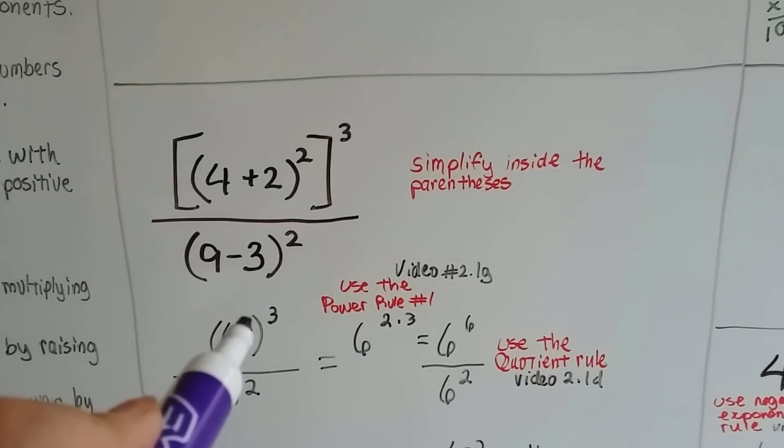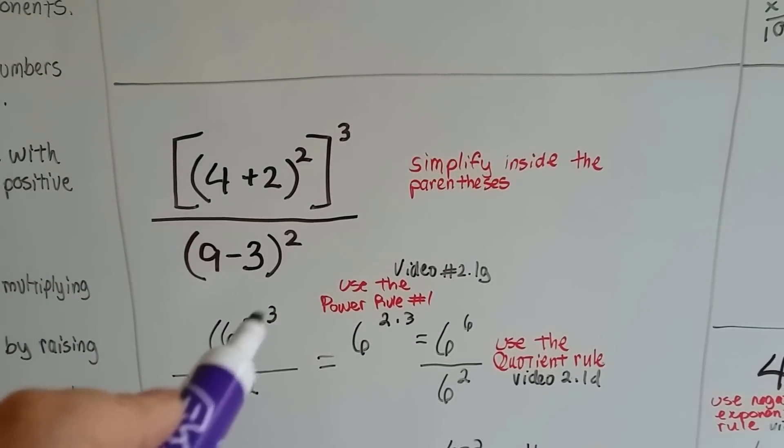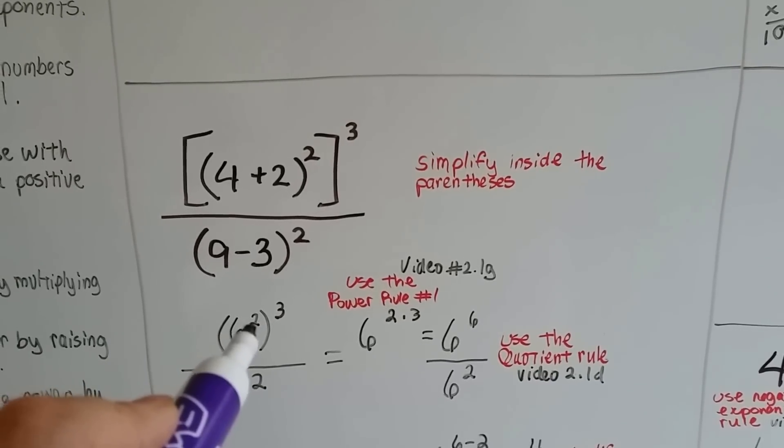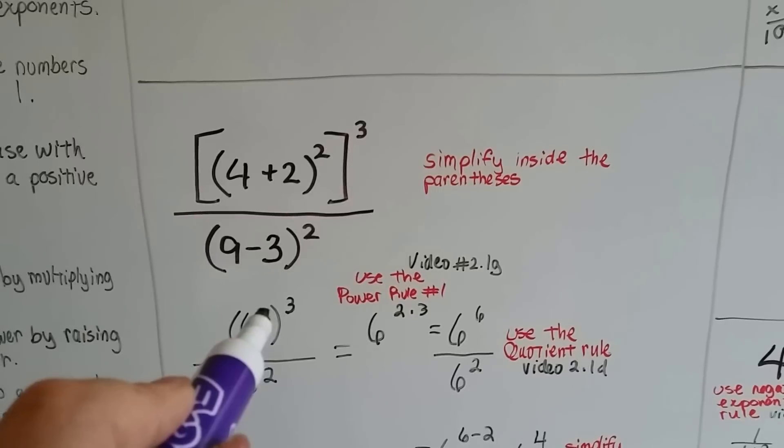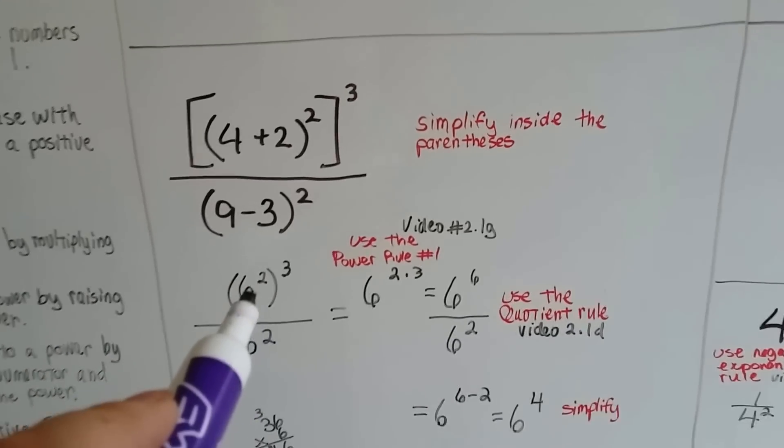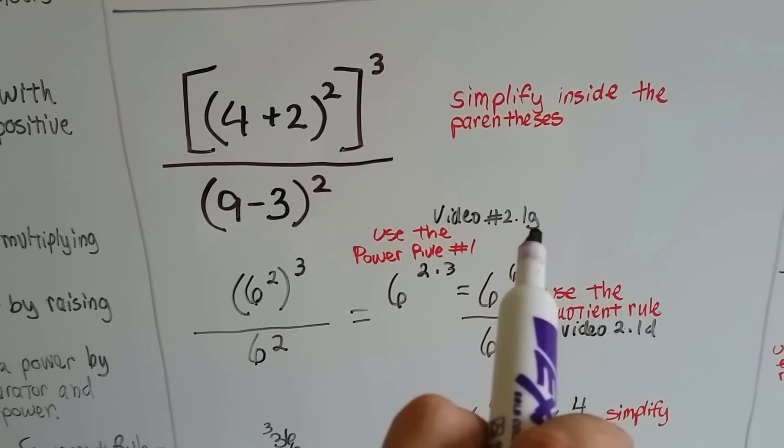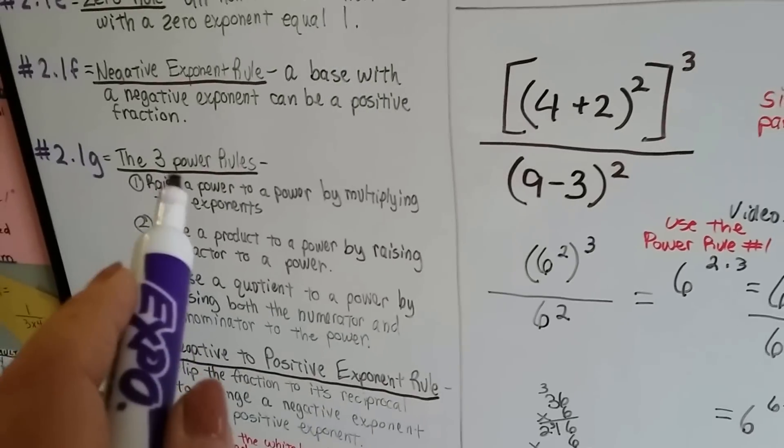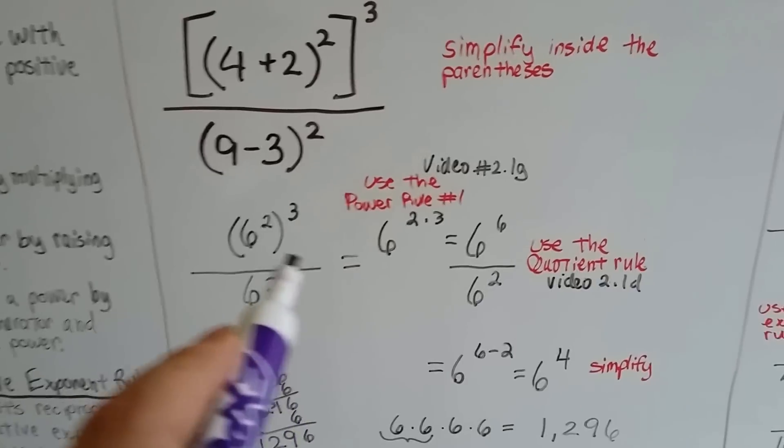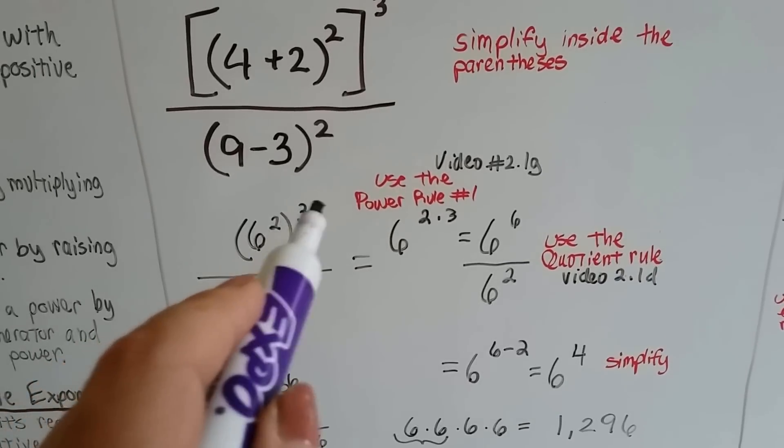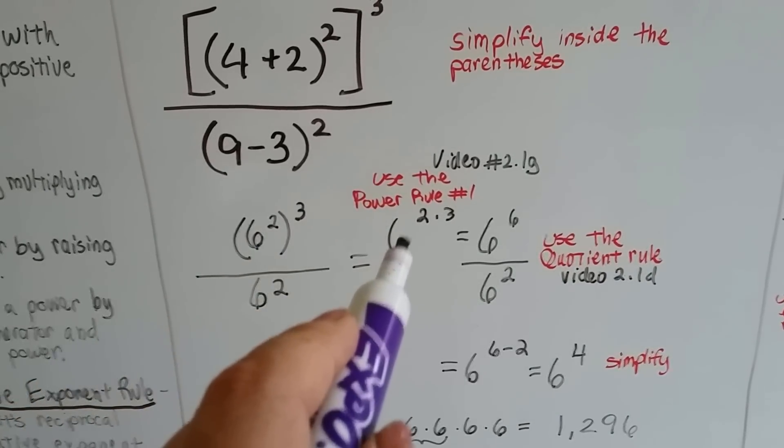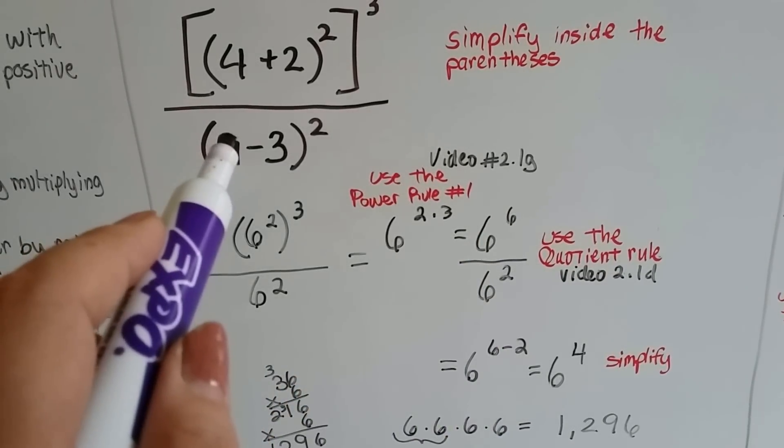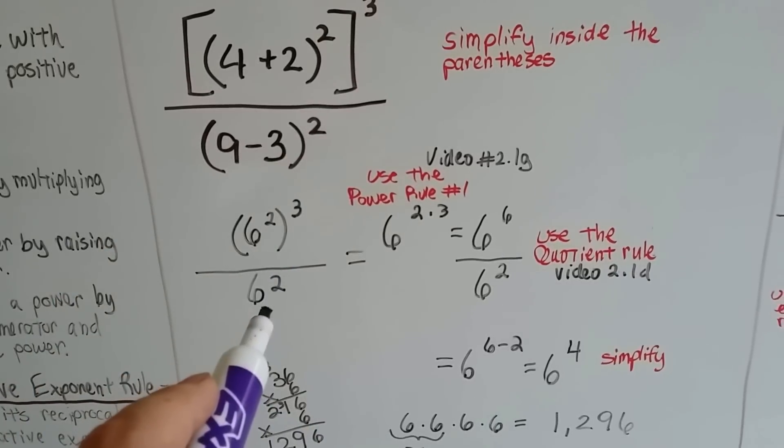So, that means we've got 6 to the 2nd power in parentheses, and it's to the 3rd power. That means 6 to the 2nd power times 6 to the 2nd power times 6 to the 2nd power. But we don't need to do that, because if you watched video number 2.1g, you know that we can use the power rule number 1. All we have to do is multiply the 2 times the 3. 2 times 3 is going to be 6 to the 6th power. This, 9 take away 3 is 6 to the 2nd power.